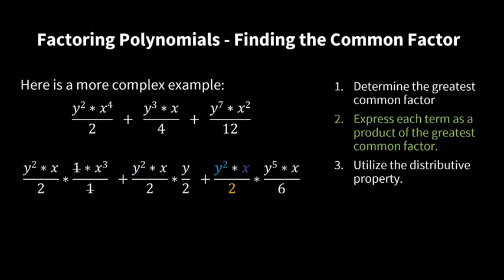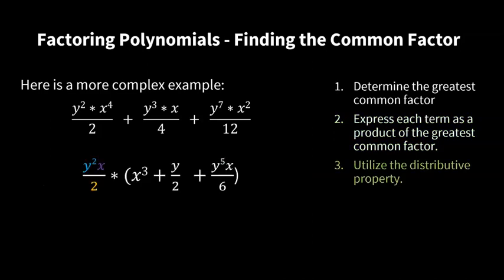For the third term: pulling y squared from y to the power of 7 gives y to the power of 5; pulling x from x squared leaves a single x; and dividing 12 by 2 leaves 6. Accumulating all of that and taking out the common factor, we are left with the simplified polynomial: x to the power of 3 plus y divided by 2 plus y to the power of 5 times x divided by 6. This is a much more simplified version and it is easier to solve.